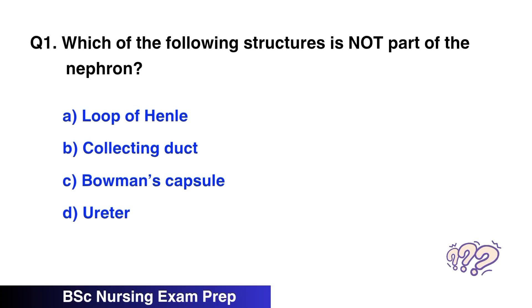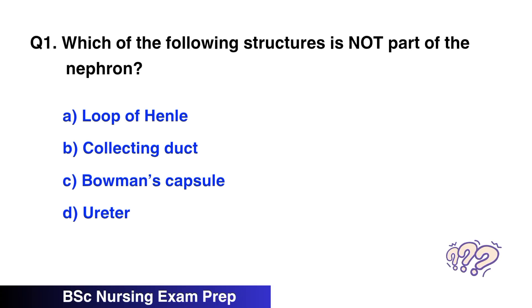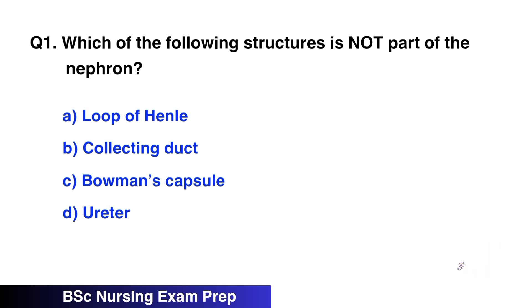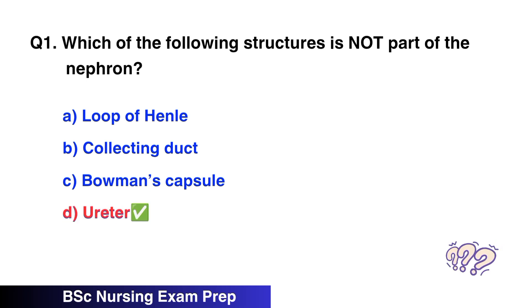Question number 1. Which of the following structures is not part of the nephron? The right option is D, ureter.